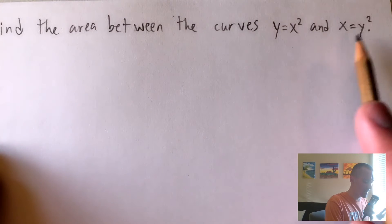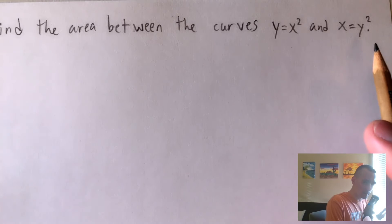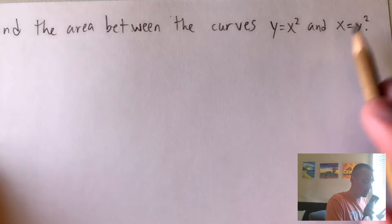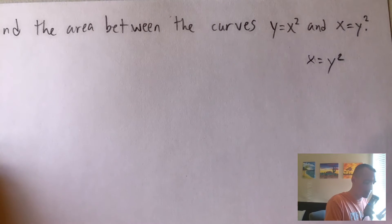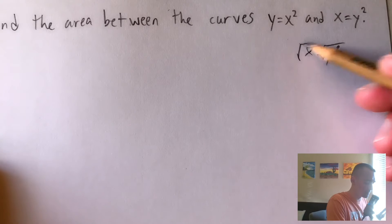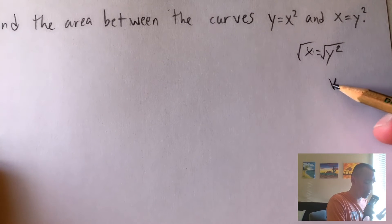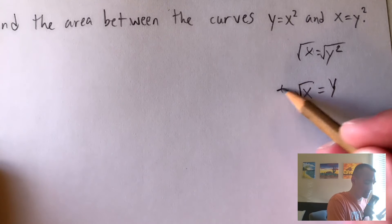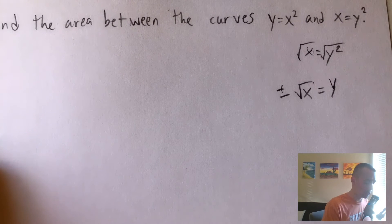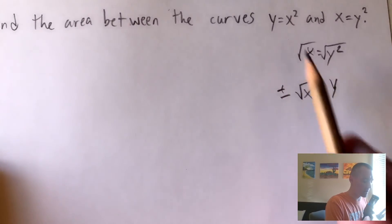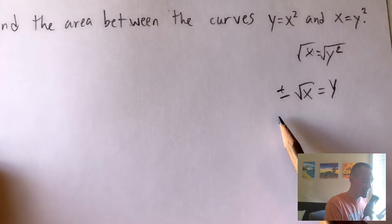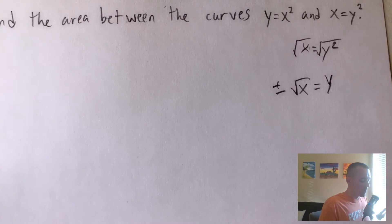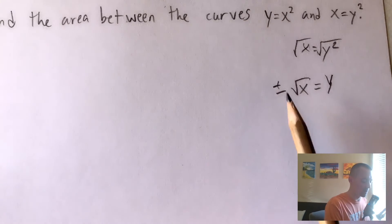The first function y equals x squared is already in the form y equals f(x), so we don't need to do anything with that one. For x equals y squared, we want to get y all by itself, so we square root both sides. That gives us y equals the square root of x, but one important thing to keep in mind is that we actually need to take both the positive and the negative square root.